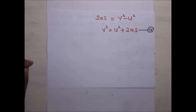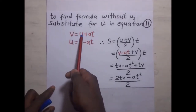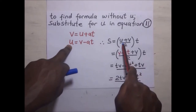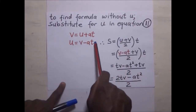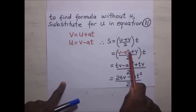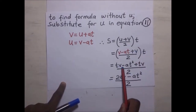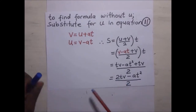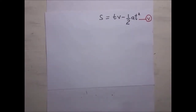For the fifth equation, make u the subject of the first equation: u = v − at. Substitute into s = (u + v)/2 × t: s = (v − at + v)/2 × t = (2v − at)/2 × t = vt − ½at². This gives the fifth equation of motion: s = vt − ½at².